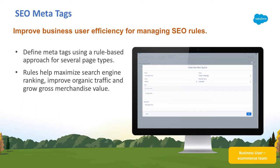Commerce Cloud's new meta tag rules allow merchants to define meta tags using a rule-based approach for several page types, like product listing pages, product detail pages, content pages, search result pages, and more.